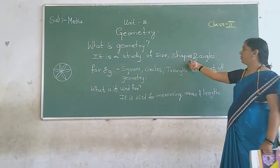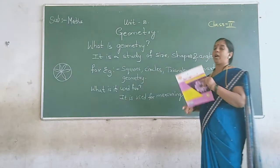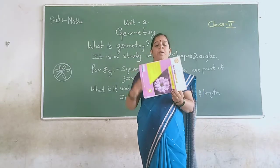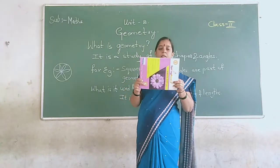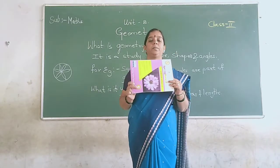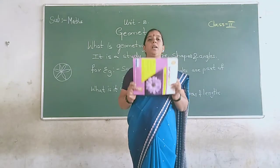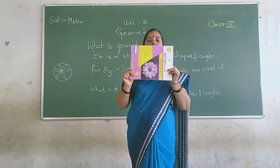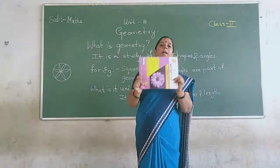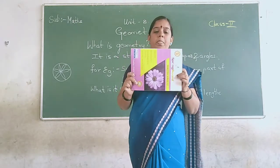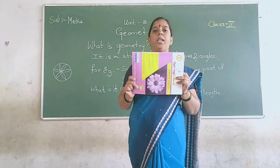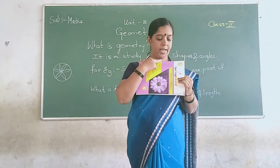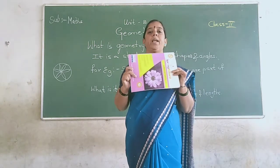Geometry is a study of size, shapes, and angles. Right now in my hand I am having a math textbook. Can anybody guess what shape the textbook is in? The textbook is in a rectangle shape. Can you identify what all is in this shape? All the sides are equal and it has 4 corners. This is the length and this is the width the rectangle has.